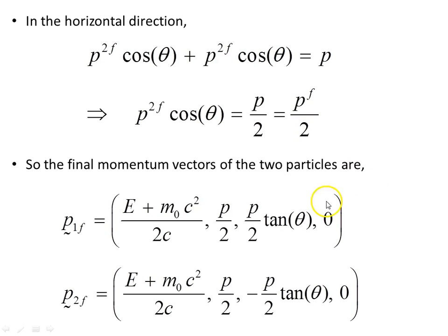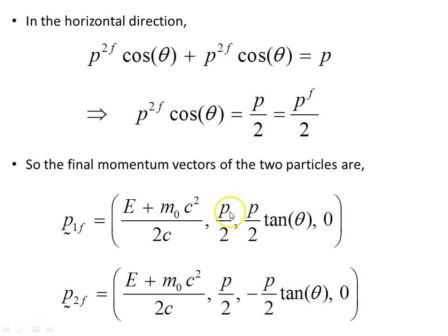The final momentum vectors for the two particles: the first has zero component E_f/c, x-component p/2, y-component p_f sin θ, and z-component zero. The second particle has the same except negative y-momentum. Since p_f cos θ = p/2, dividing the sine term by the cosine term gives us the tangent, giving us tan θ.